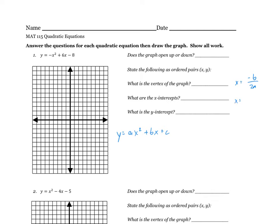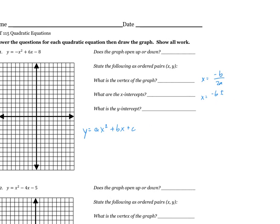x equals negative b plus or minus, the quadratic equation, I mean the quadratic formula, I should say. x equals negative b plus or minus the square root of b squared minus 4ac over 2a.